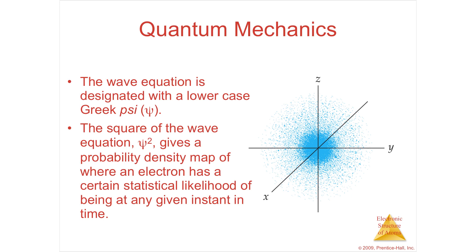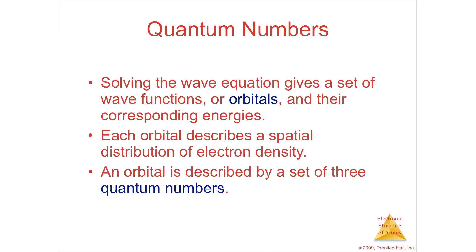So, the wave equation is designated with a psi, and the square gives you the probability at any place. Now, when you solve the wave equation, you get a set of functions called orbitals, and the orbital with their energies.